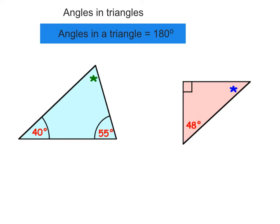So we're going to use that to work out what the missing angles are in these examples. Taking the first example, what I'm going to do is add the 40 and the 55 together and then take it away from 180 to find out what the green star is. So 40 add 55. It's going to be 0 add 5 is 5, 4 add 5 is 95. So they add to get 95.